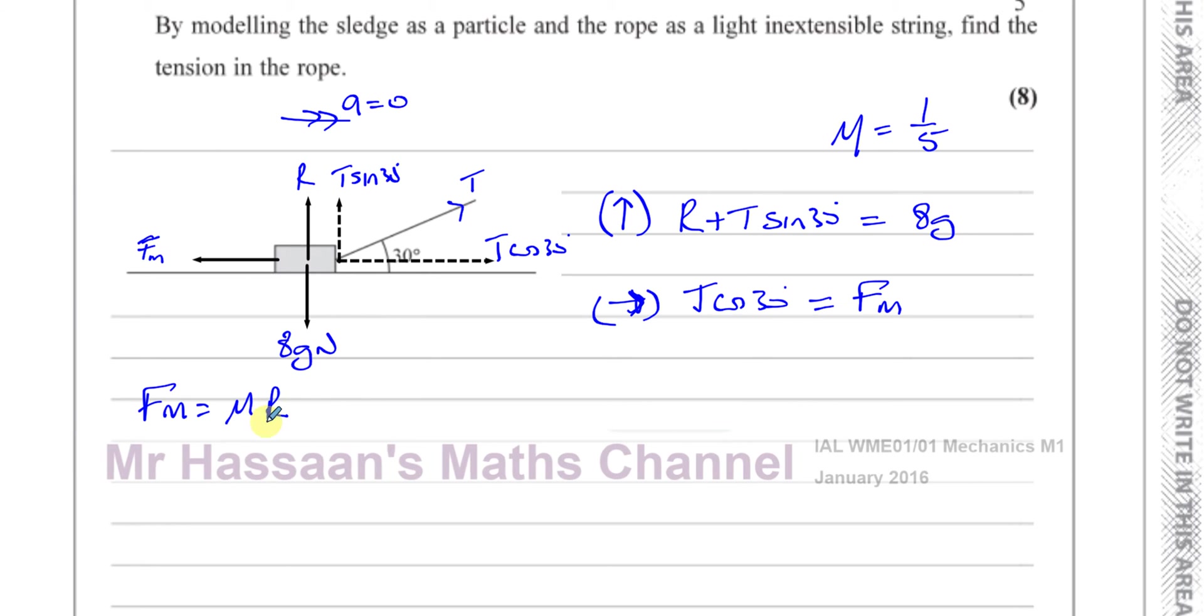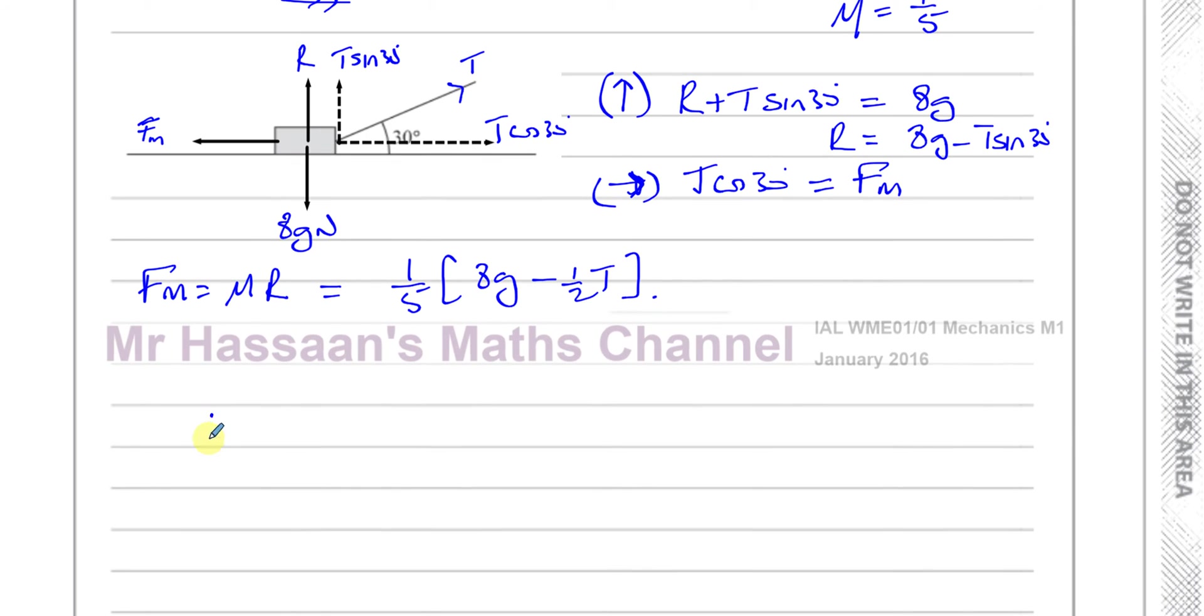So now, I know what R is in terms of T. I can rearrange this and say R is equal to 8G minus T times sine 30. And I know what μ is: μ is 1 over 5. So I can say F_max is equal to 1 fifth times 8G minus, and sine 30 is equal to a half, so I'll put this as a half of T. So now I can say T times cosine 30, and cosine 30 is root 3 over 2, is equal to F_max, which is 1 fifth times 8G minus a half T. So you can see here I have just one unknown in this equation. Now I can find what T is.